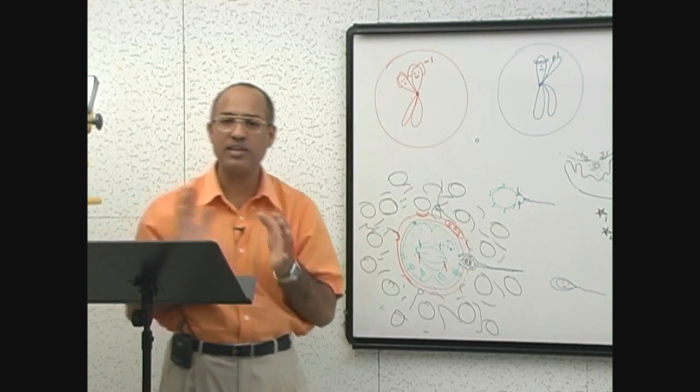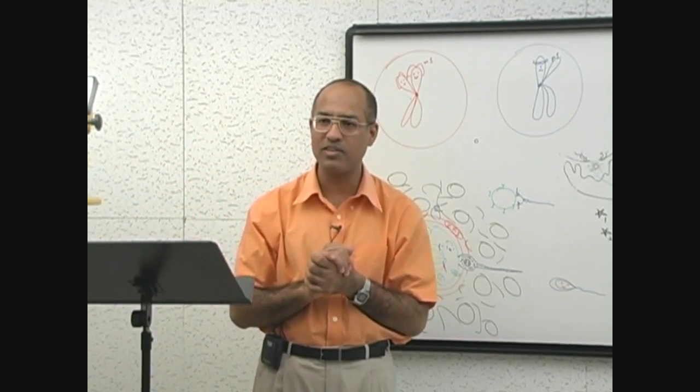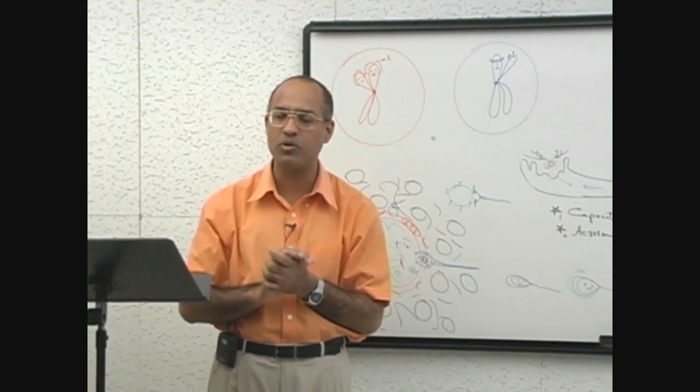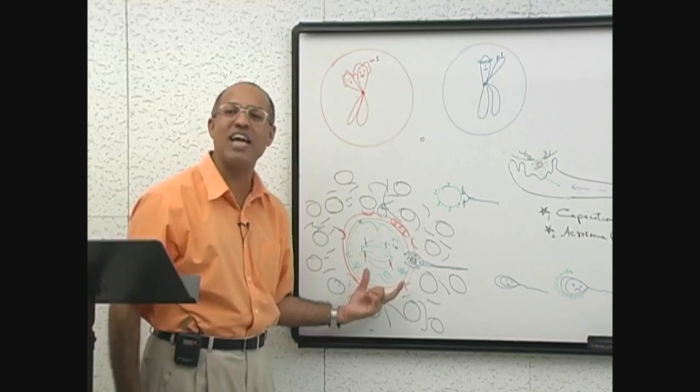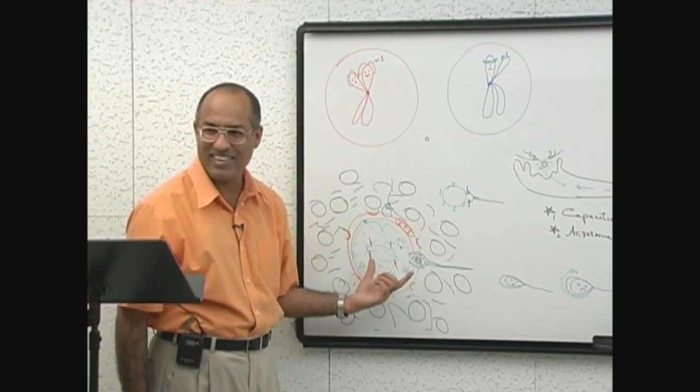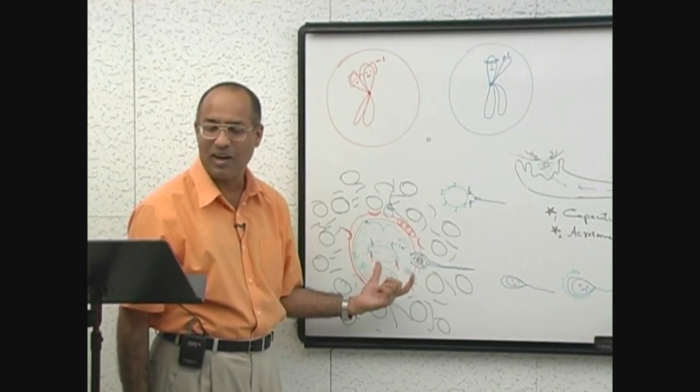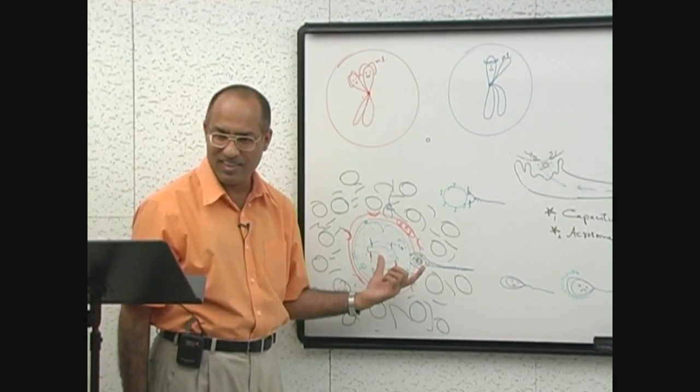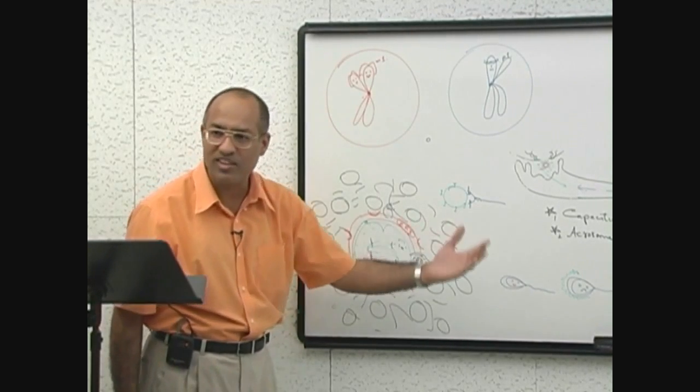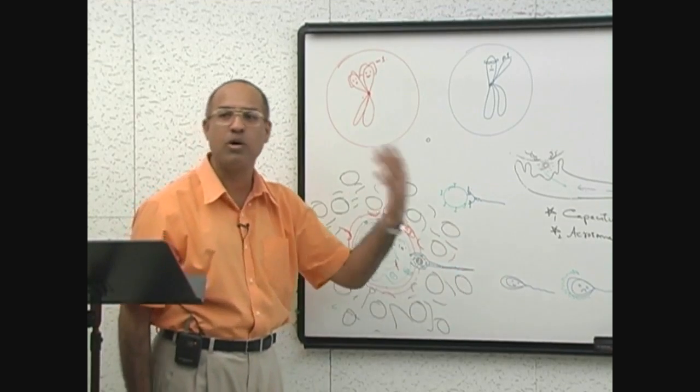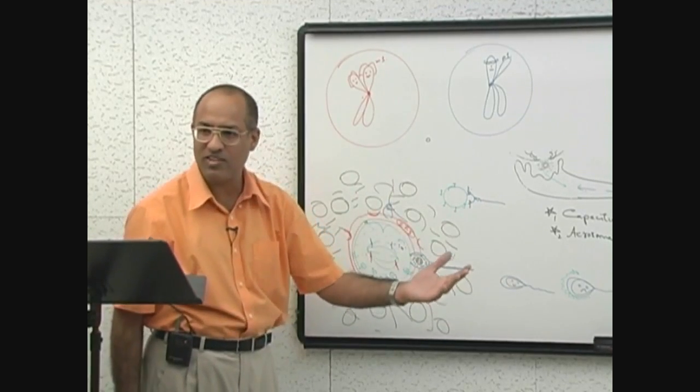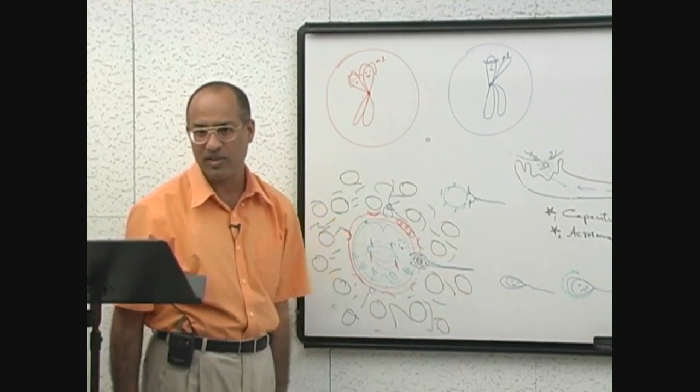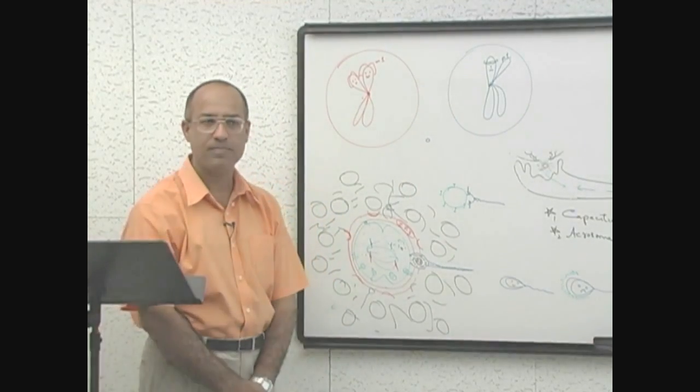So, here we complete our lecture of fertilization. Next lecture we will talk about how this unicellular embryo, fertilized ovum or zygote, how zygote convert into two cell stage and four cell stage and then morula and then blastocyst and so and so forth. That will be discussed in coming lectures. Class dismissed. Thank you.